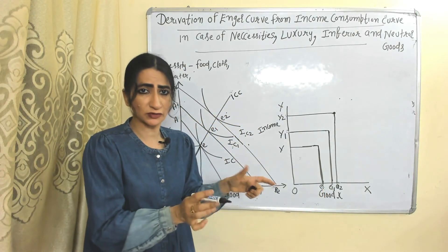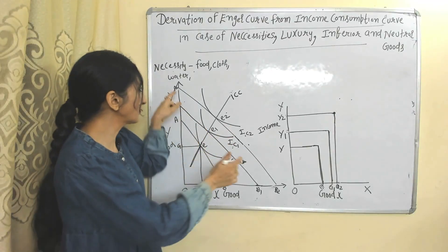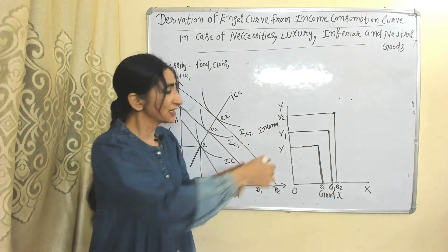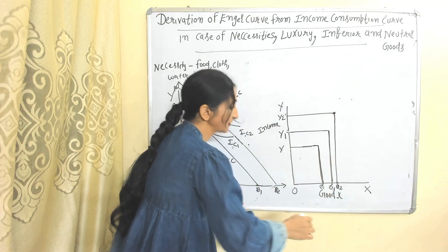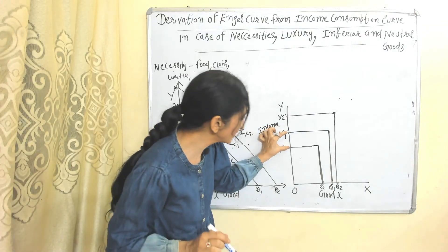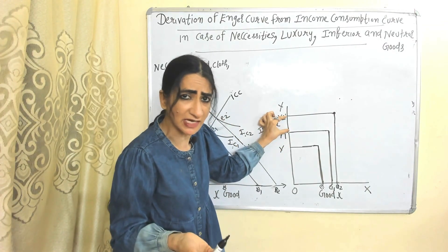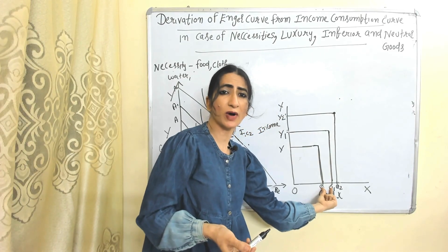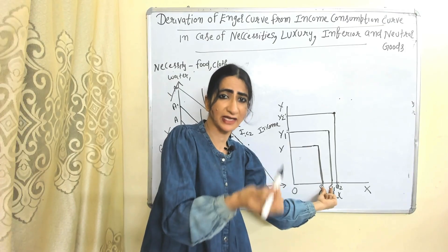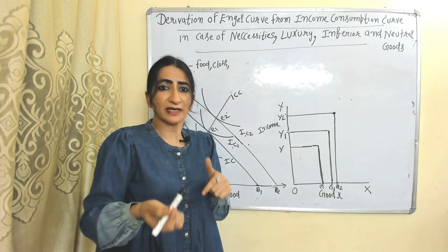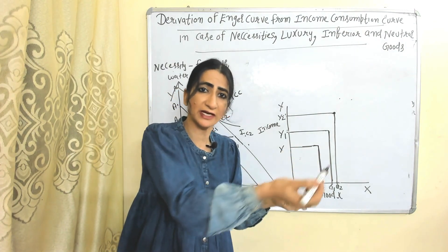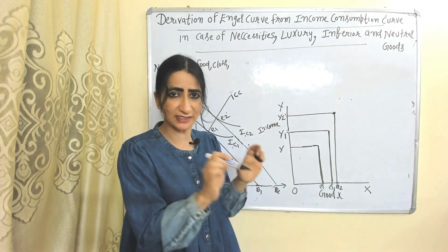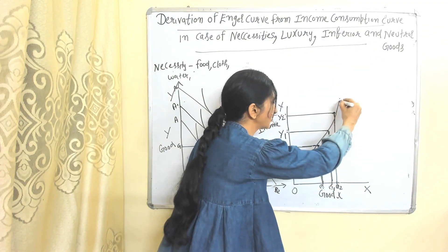Now suppose income of the consumer increases more. As a result, his budget line shifts outward again. This is the new budget line, new indifference curve, and new consumer equilibrium point. Obviously as income increases, the consumer increases quantities of X good. One most important thing: you can see income is increasing at the same rate — this gap and this gap are the same — but quantities of X good are increasing at a lesser rate; this gap is smaller than this gap. Why? Because X is a necessity good. Demand for necessity goods will not increase as much as income increases. When we join all these points, it will be called our Engel curve.